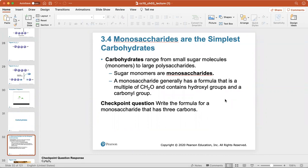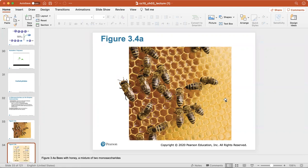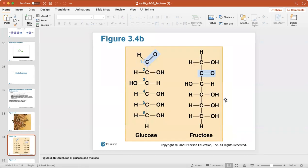Carbohydrates then range from small sugar molecules to large polysaccharides. Sugar monomers are called monosaccharides, and they generally have a formula that is a multiple of CH2O and contain hydroxyl groups and a carbonyl group. Honey is a mixture of two monosaccharides. Here's the structures of glucose and fructose. Glucose is a really important molecule in the body. Glucose is what will be necessary to enter cellular respiration to create ATP for all of your cells to use.